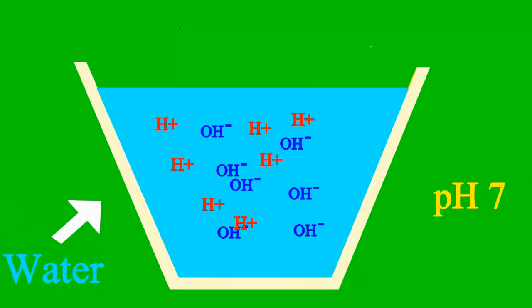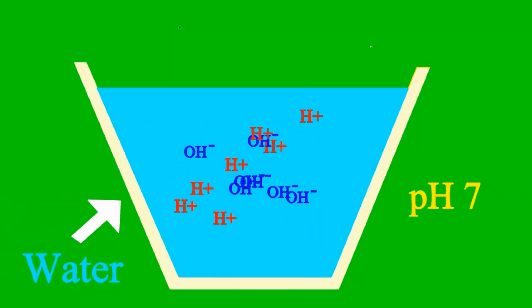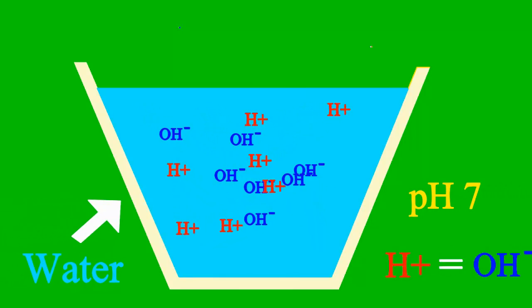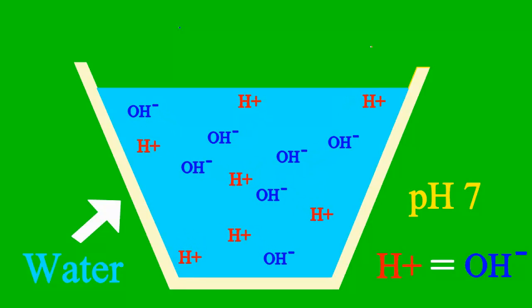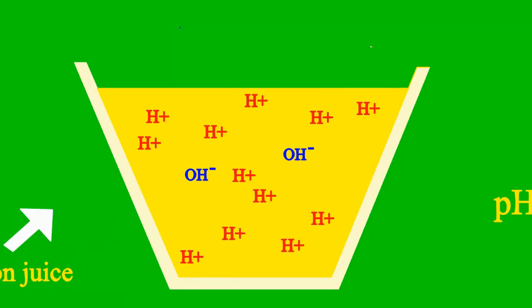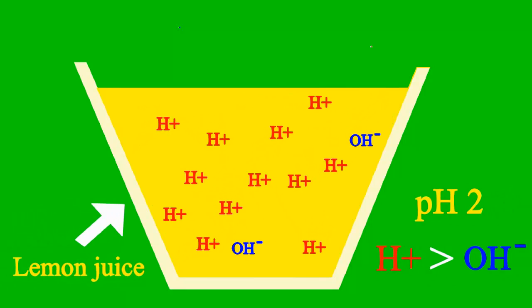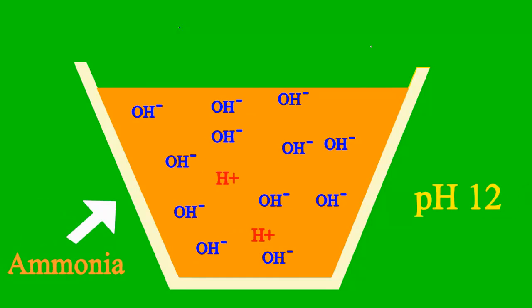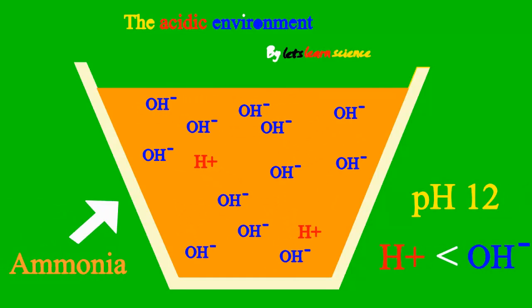When the pH is 7, it's a case where the sample is neither an acid nor a base. But less than 7, it's an acid, and more than 7, it's a base.